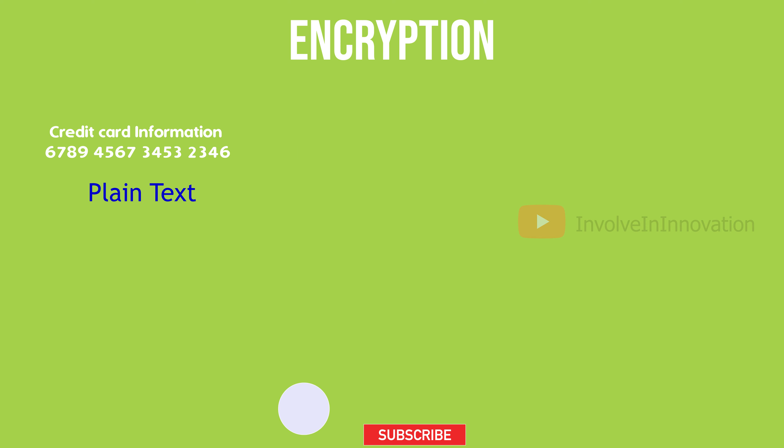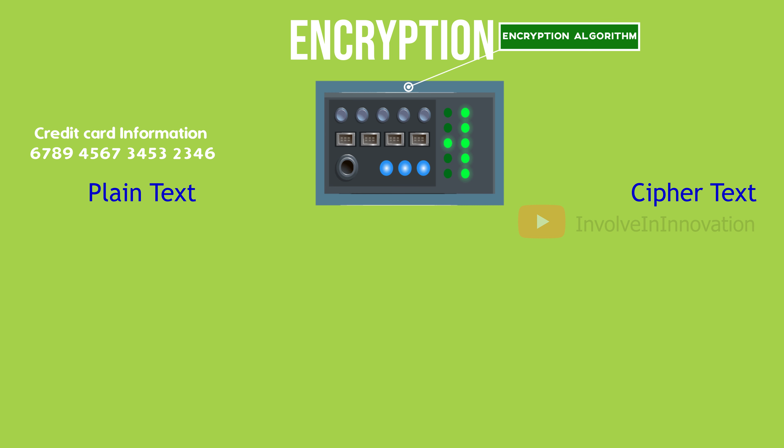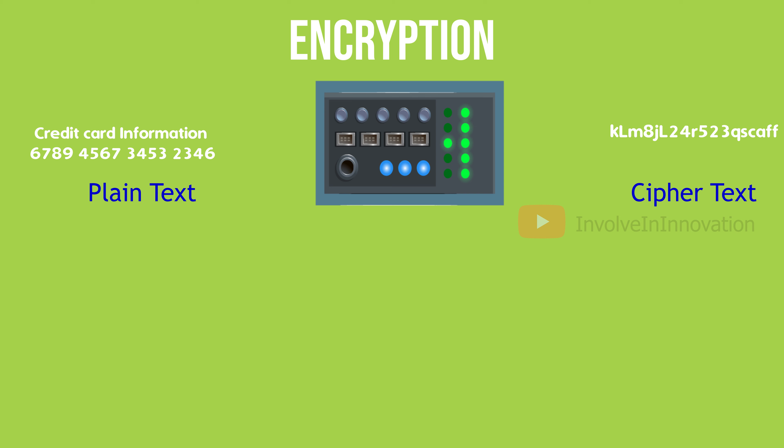Encryption is the process of encoding a message or information in such a way that only authorized parties can access it and view its content, while those who are not authorized cannot view its content. Encryption converts plain text to scrambled cipher text using an encryption algorithm. In blockchain we use asymmetric key encryption, which is also known as public key encryption algorithm.